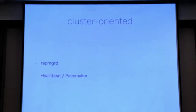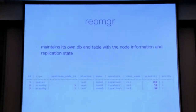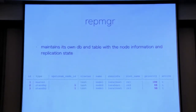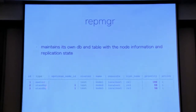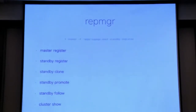We do have cluster-oriented tools. RepManagerD is one of them — it's part of RepManager, a clustering and replication tool. It's a daemon that sets its own database on your main cluster, and updates the cluster status. You can see which node is master, standby, and their priorities. It also gives you cool API functions — plain old vanilla Postgres where it puts a nice API on top — you can do stuff like register a new master, standby register, and so on.